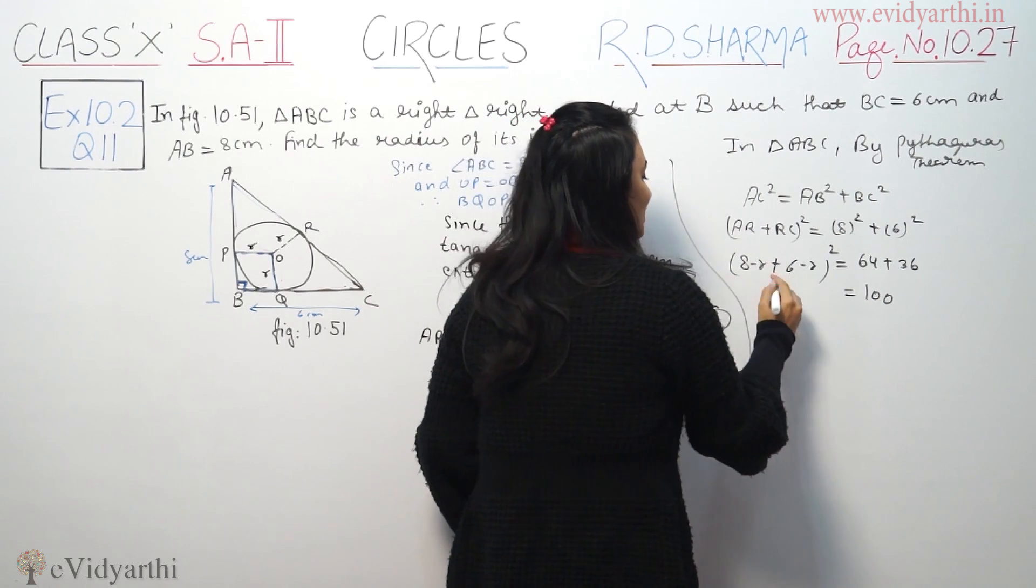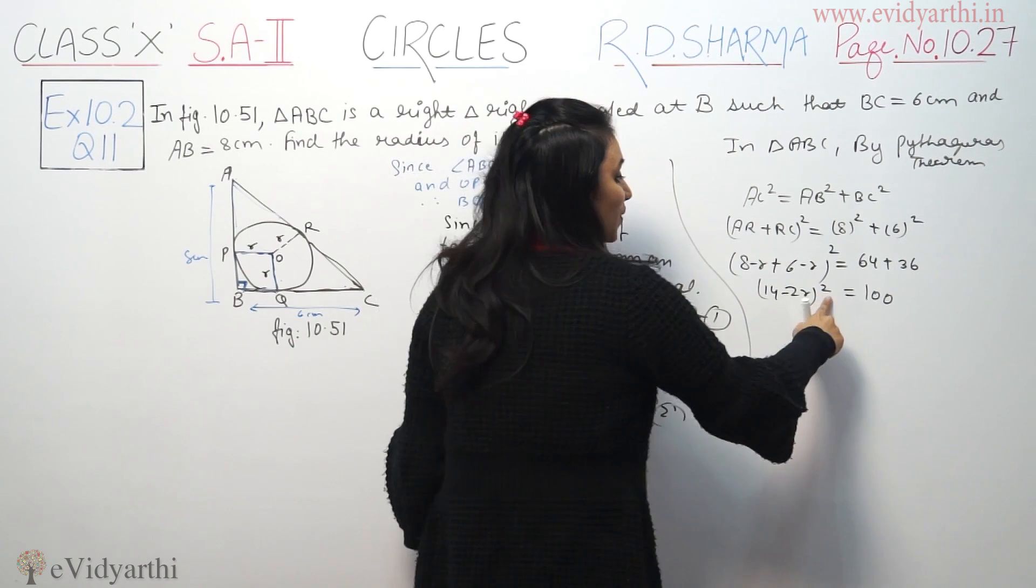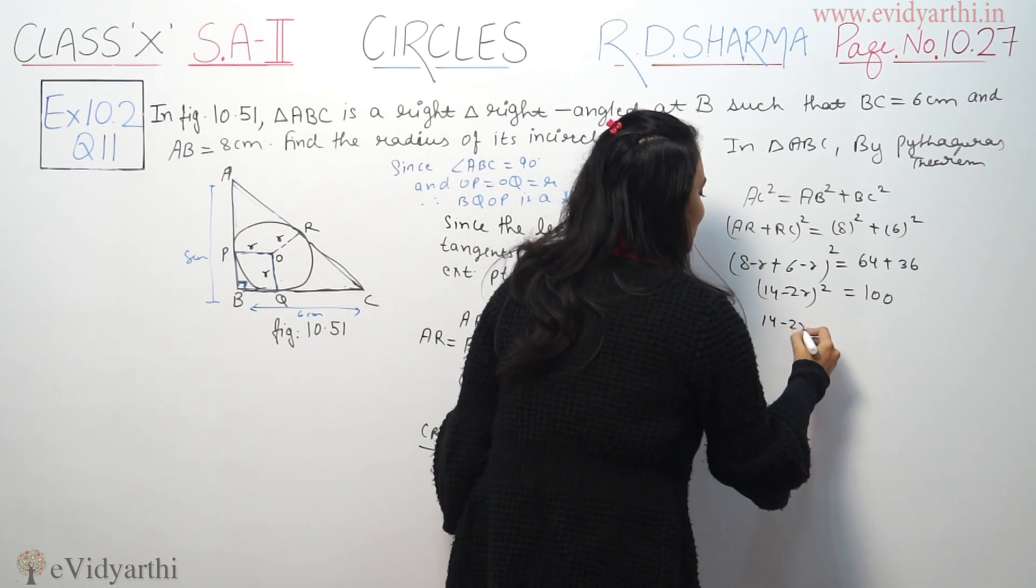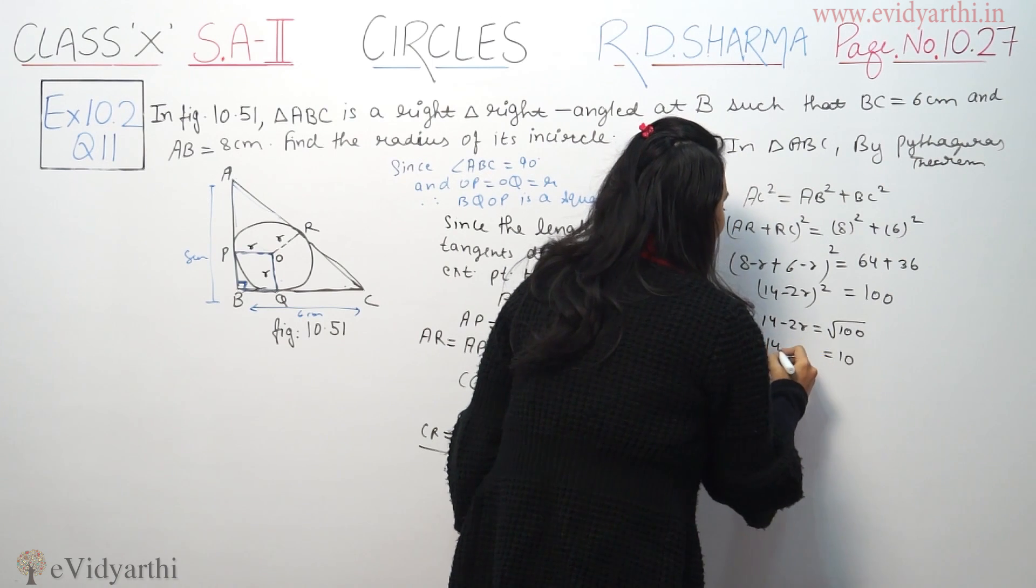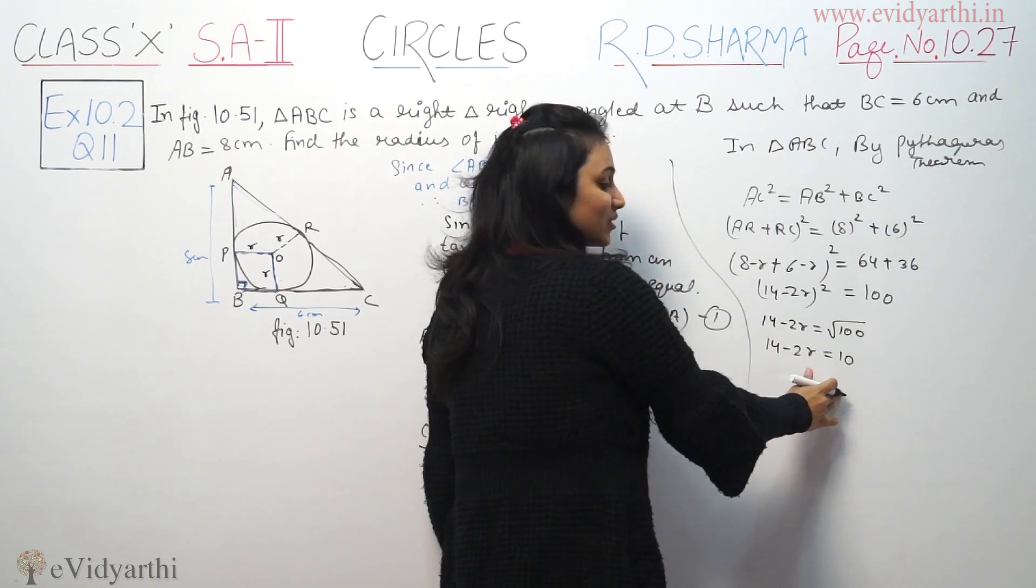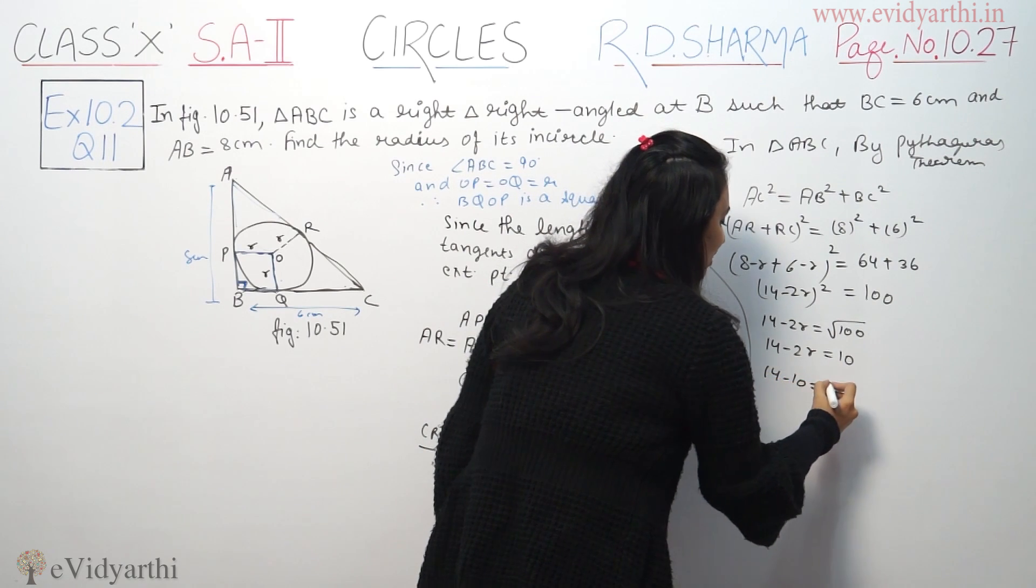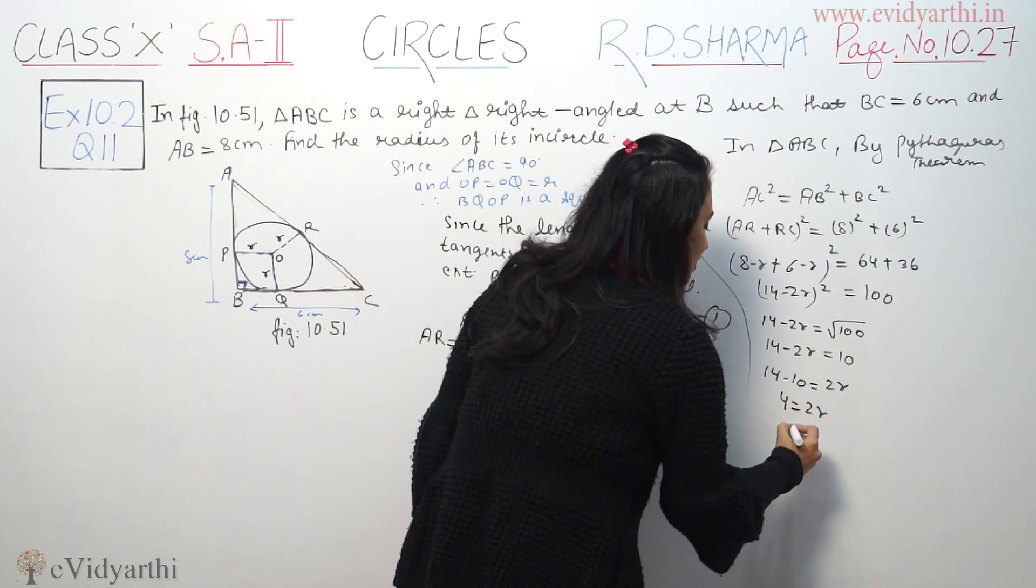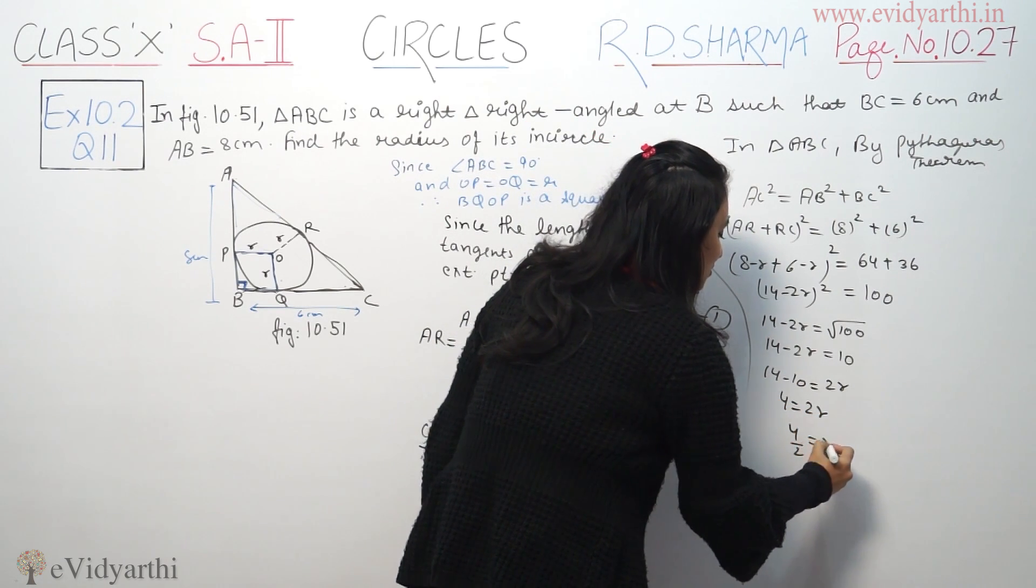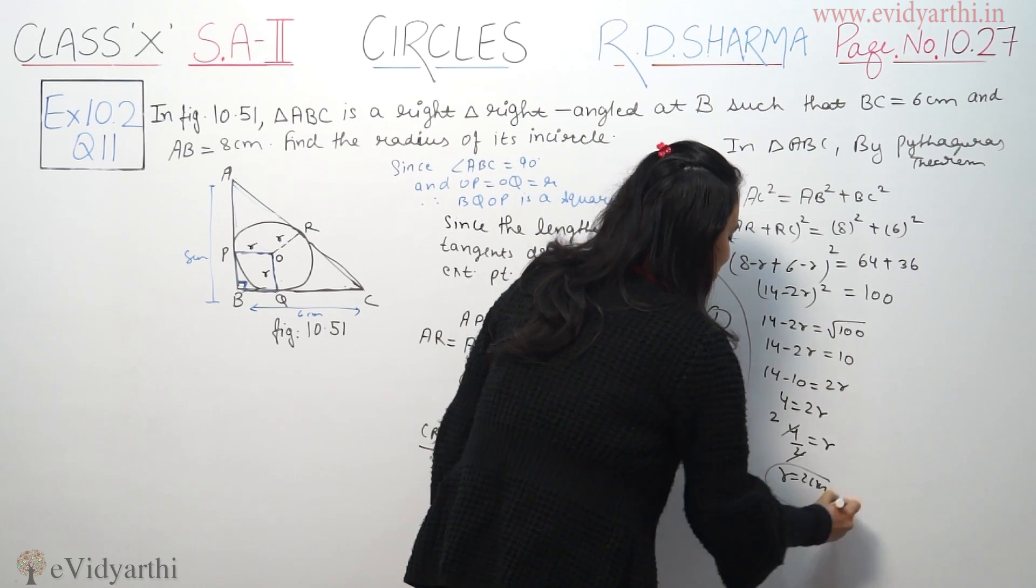Here 8 plus 6 is 14 minus 2r, whole square. Square se square cancel ho gaya, so we get 14 minus 2r is equal to 10. So 14 minus 10, 4 is equal to 2r. 4 by 2 is equal to r. So radius is 2 cm.